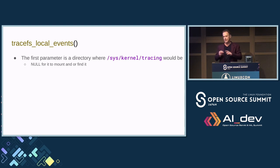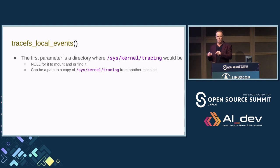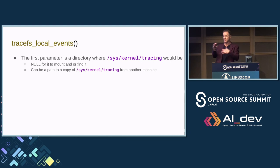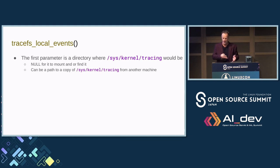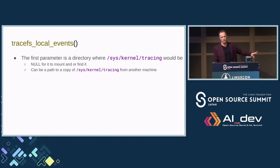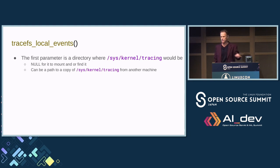The reason it can also take a path is sometimes I'll be on one machine and want to load events from another machine. I copy the event directories, tar them up, put them on my local machine, and point to that directory path so it parses that instead. It's a use case I seldom use, but it's there. Null will be mostly your use case.